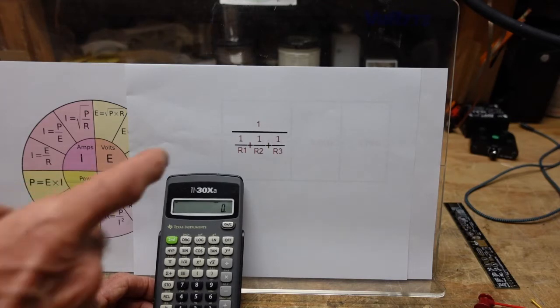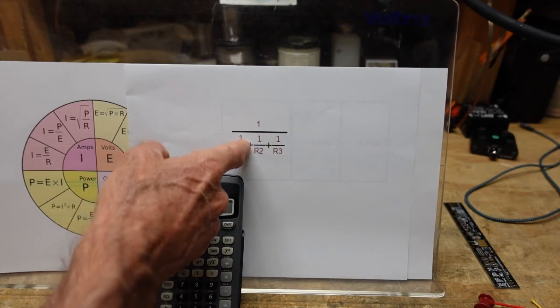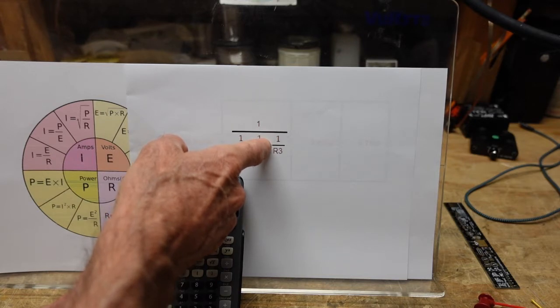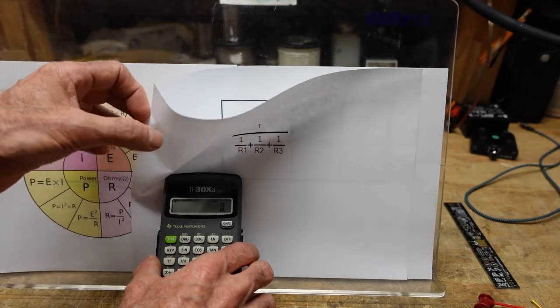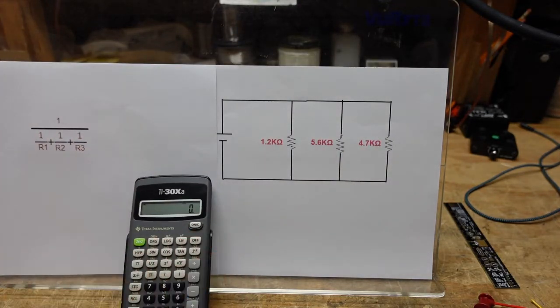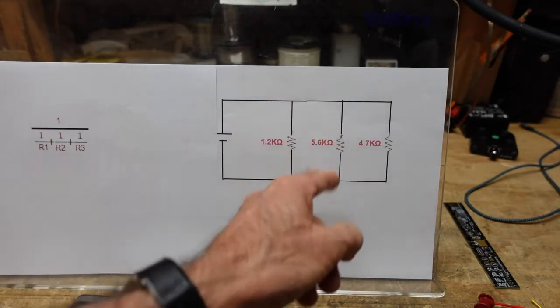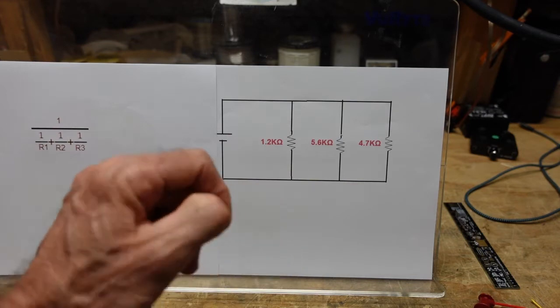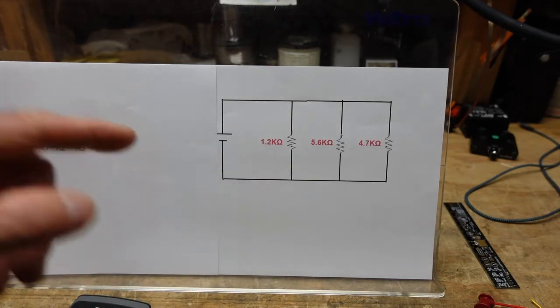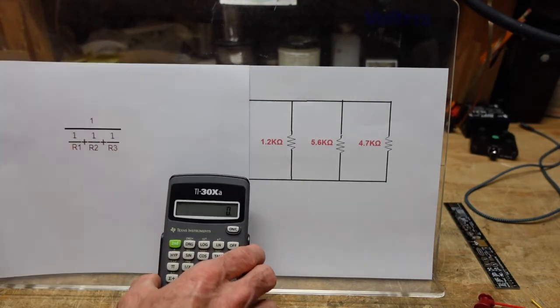Here's our formula: we're going to take the reciprocal of the first resistance, add it to the reciprocal of the second resistance, add that to the reciprocal of the third resistance, and then we are going to take the reciprocal of that. Don't be freaked out by it, it's really just a series of keystrokes. Here's a little trick: you'll know you've got it right if your answer is less than the lowest value of resistor in the circuit. The reason for this is we have parallel paths here. If you've ever worked with speakers you know two 8 ohm speakers in parallel give you 4 ohms.